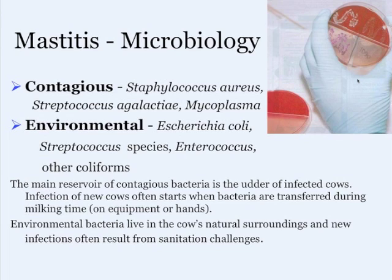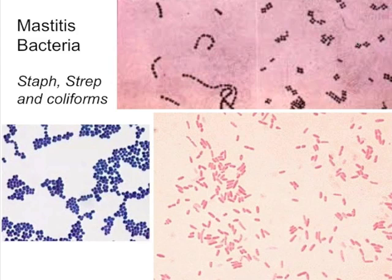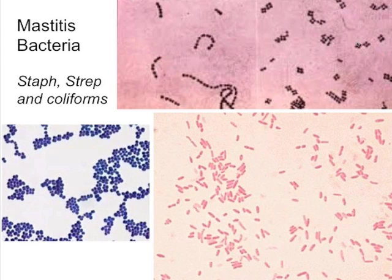Looking at bacteria under a microscope, they're stained with a gram stain — dark blue or black is gram positive, reddish is gram negative. Staphylococcus means 'bunch of grapes' in Greek and looks exactly that way under the microscope. Streptococcus means twisted or in chains. E. coli is a gram-negative rod, more elongated. Just looking at the shape under a microscope often tells us what kind of bacteria we have.